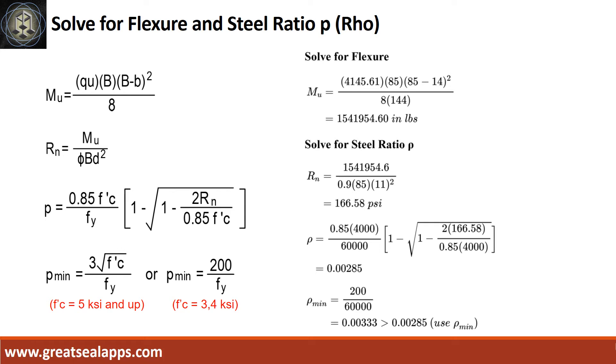The beam design ratio RN equals 166.58 PSI and reinforcement ratio ρ equals 0.00285. Use ρ minimum of 0.00333.